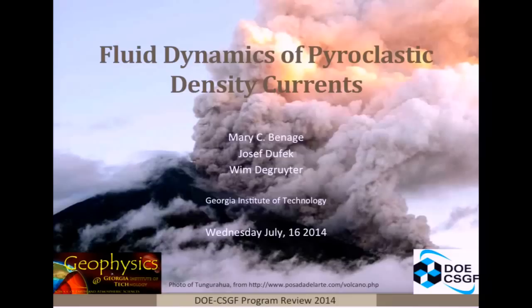Pyroclastic density currents, to reduce some jargon, are basically particle-laden gravity currents generated from volcanic eruptions. They're composed of hot gases and a variation in particle sizes. They propagate laterally away from the source due to the density being greater than the ambient surrounding fluid, which in our case is ambient air.